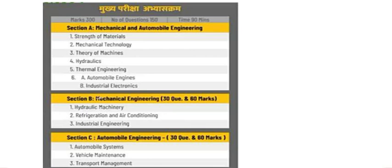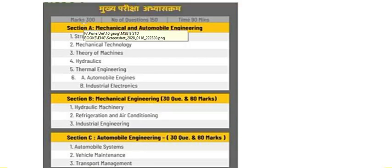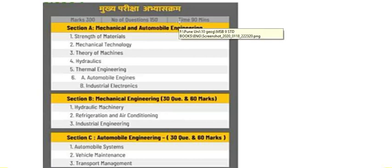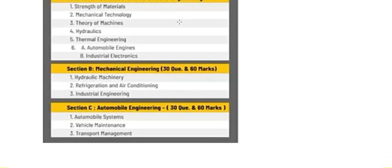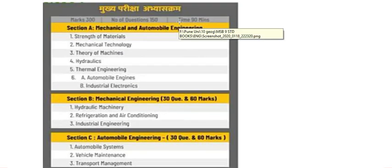For the Mains Exam, there are three sections. The first section is compulsory for all, while Section B and Section C are optional — you can attempt either Section B or Section C. This particular paper is for 300 marks. The number of questions is 150 and the time duration is 90 minutes. That is how this Mains Exam will take place.